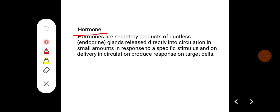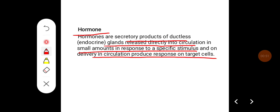Hormones are the secretory products of ductless, that is endocrine glands, released directly into the circulation in small amounts in response to a specific stimulus, and on delivery in the circulation produce a response on target cells.